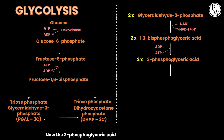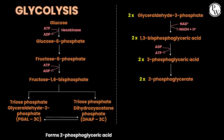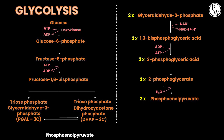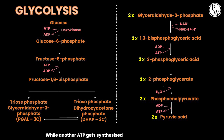Now the 3-phosphoglyceric acid forms 2-phosphoglyceric acid, which further forms phosphoenol pyruvate. Glycolysis — still phosphoenol pyruvate then forms pyruvate acid, while another ATP gets synthesized.